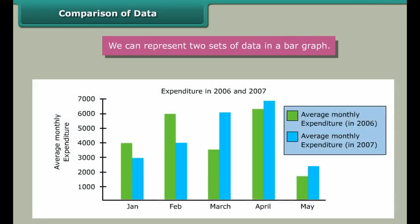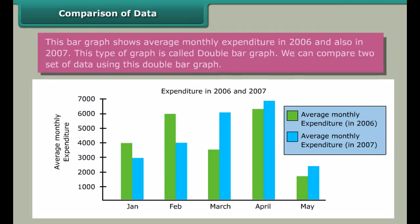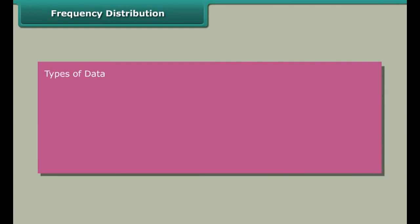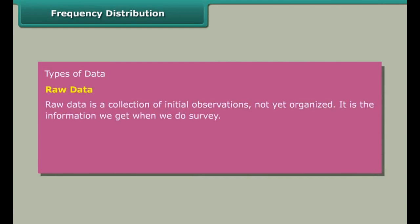Comparison of data: We can represent two sets of data in a bar graph. This bar graph shows average monthly expenditure in 2006 and also in 2007. This type of graph is called double bar graph. We can compare two sets of data using this double bar graph.